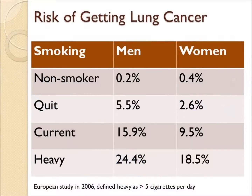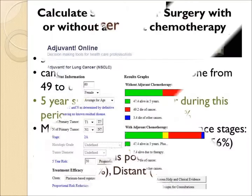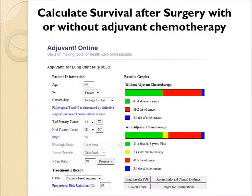The risk of getting lung cancer in a non-smoker is less than half a percent, but in a heavy smoker, particularly in men, it can be as high as 20 or 30 percent. The five-year survival over the last 20 or 30 years has only gone up to 17 percent, and even patients with early or local disease have a fairly poor survival with lung cancer. There are calculators on the website that will calculate the survival after surgery with or without chemotherapy.